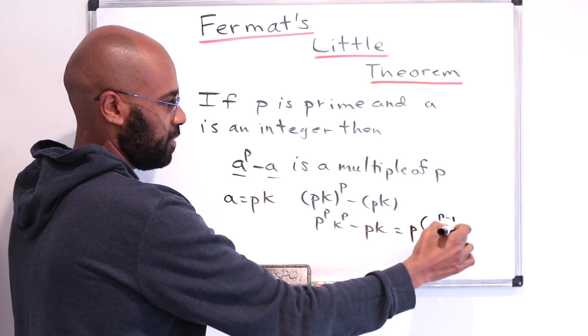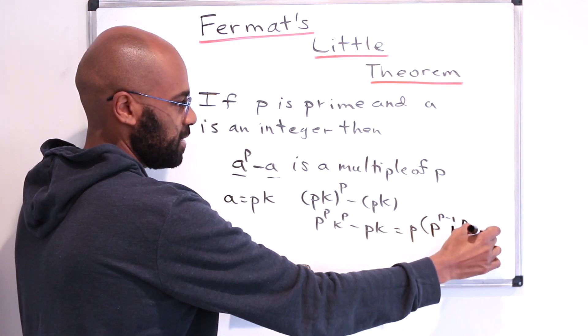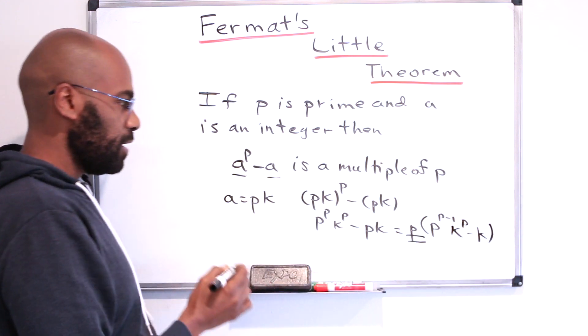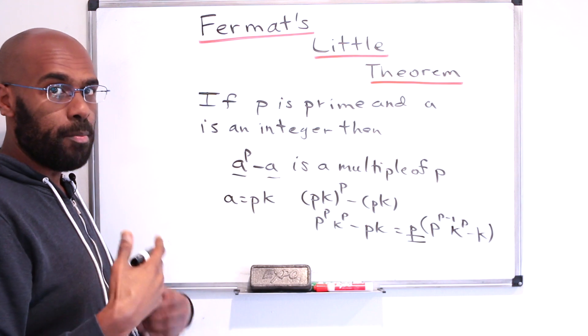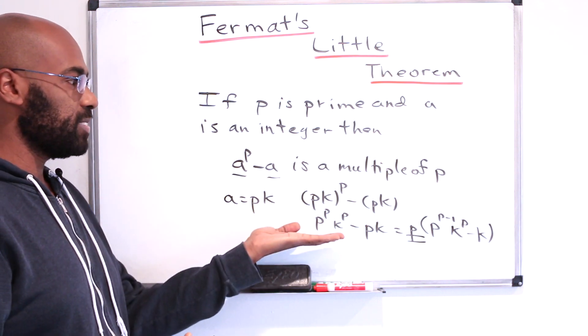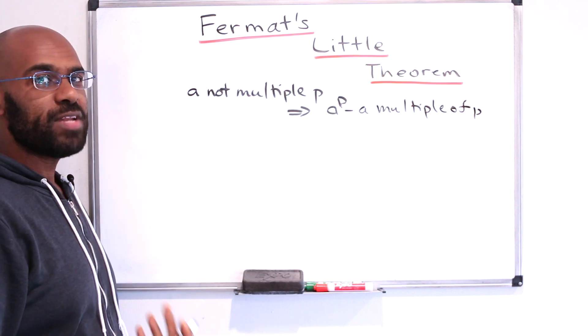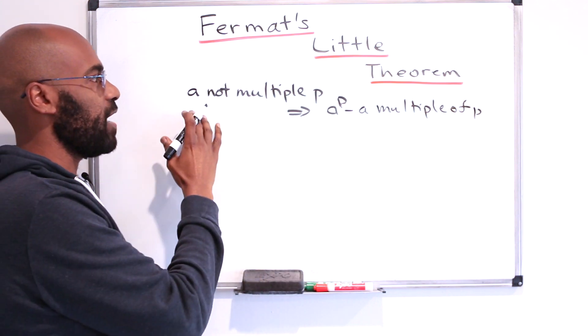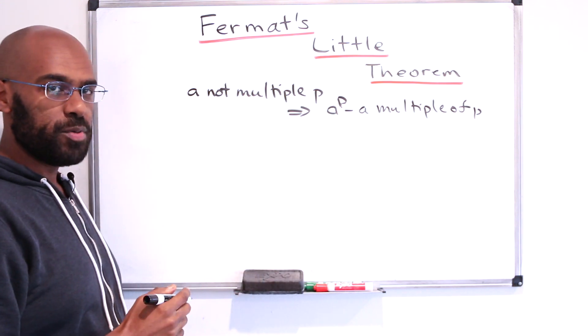The other factor being p to the p minus 1 times k to the p minus k. So we'll eliminate the possibility of a being a multiple of p, because we've already established that this will be a multiple of p as a consequence. So we've now reduced the problem to the statement that if a is not a multiple of p, then a to the p minus a is a multiple of p.